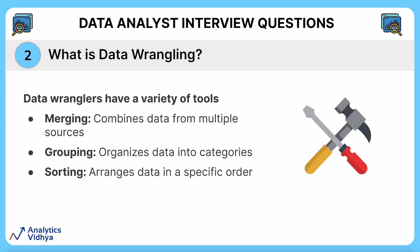Data wranglers have a variety of tools at their disposal. Merging allows them to combine data from different sources, like customer information and purchase history. Grouping helps organize data into categories, while sorting arranges data in a specific order — alphabetical, chronological, etc. These are just a few examples; data wrangling techniques are vast and versatile.